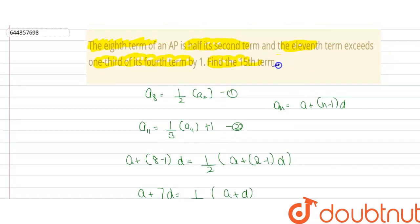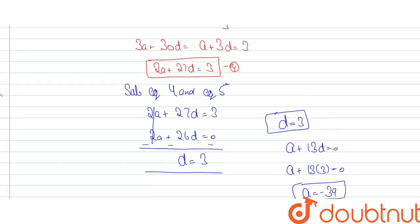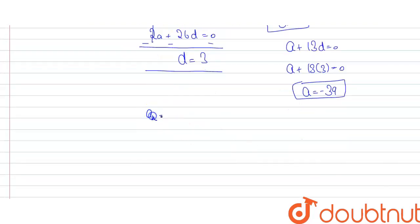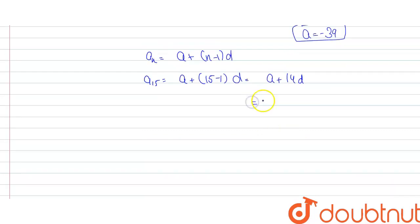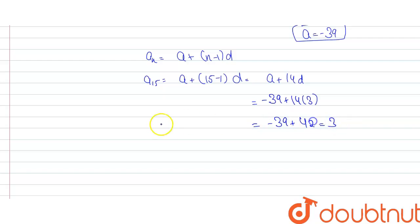As we have to find the 15th term, we use the nth term formula: a plus (n minus 1) into d. So a15 = a + 14d = -39 + 14 × 3 = -39 + 42 = 3. Therefore the 15th term of the AP is 3.